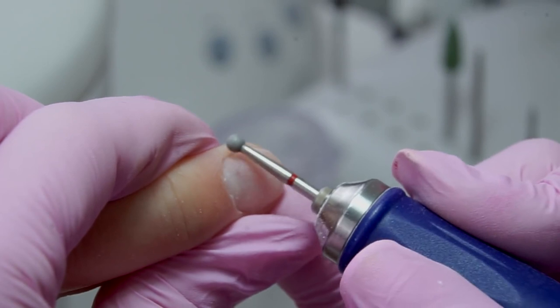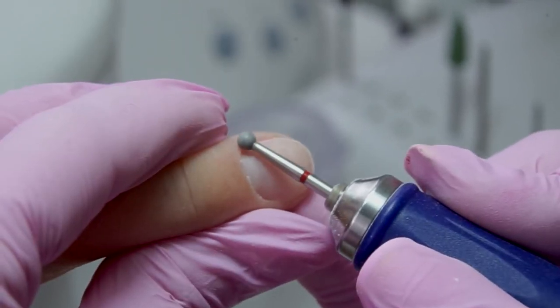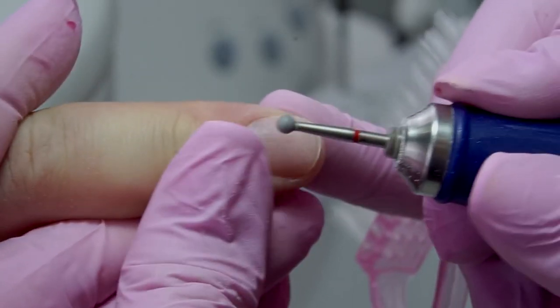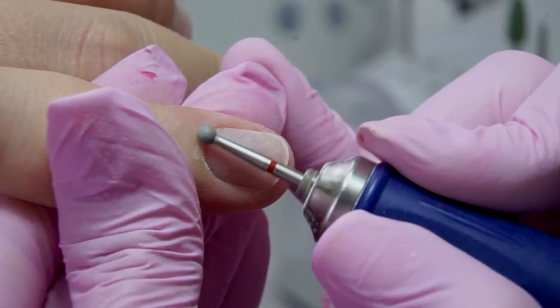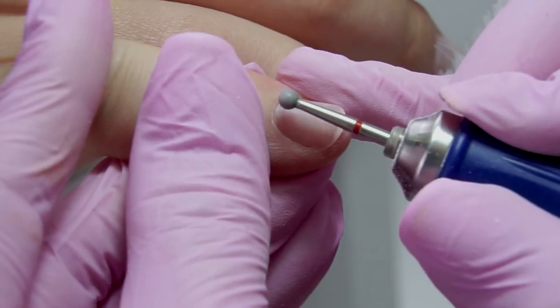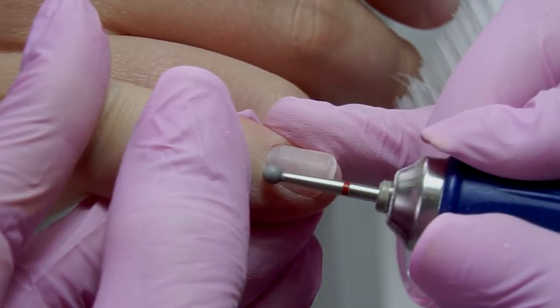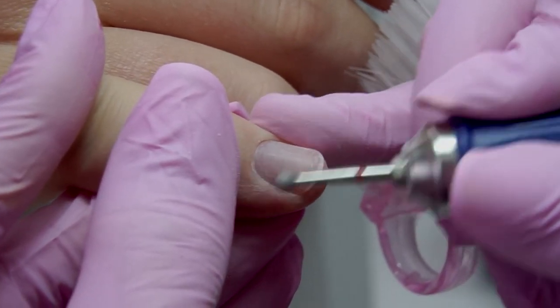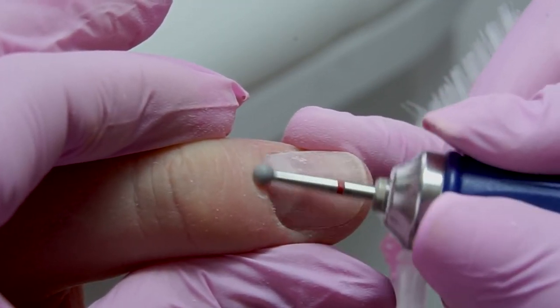I'm removing the cuticle with a red sphere diamond drill bit, 0.23 in diameter. You can finish up the e-file manicure with a silicon carbide drill bit at this stage, or you can do it after the extension, to avoid ruffled skin.